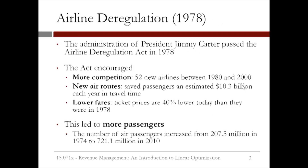In response to these inefficiencies, the administration of President Carter passed the Airline Deregulation Act in 1978. The act encouraged more competition. As a result, 52 new airlines were formed between 1980 and 2000. Also, new air routes appeared. Correspondingly, it saved passengers an estimated $10.3 billion each year in travel time. Lower fares was another outcome — ticket prices are now 40% lower than they were in 1978. This led to more passengers, with the number of fare passengers increasing from over 200 million in 1974 to over 720 million in 2010.